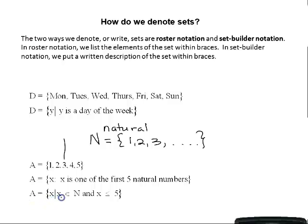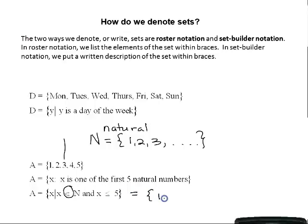Set A is the set of all X such that X is — this is the element symbol, it stands for 'is an element of' or 'is a member of' — X ∈ N, where capital N stands for natural numbers, and X is less than or equal to 5. This is the mathematical way to say 'natural number less than or equal to five.' If we went back to roster notation, the natural numbers less than or equal to 5 are 1, 2, 3, 4, and 5.